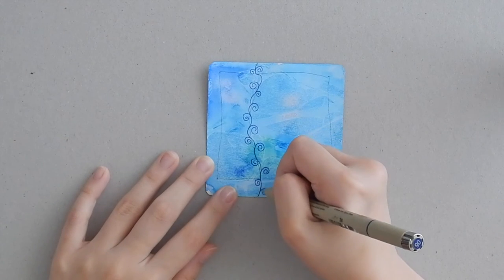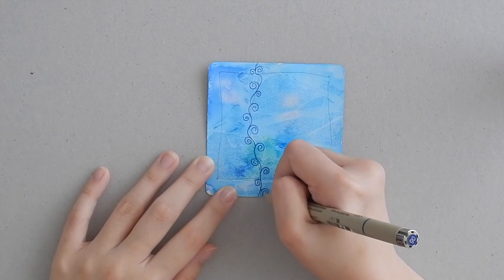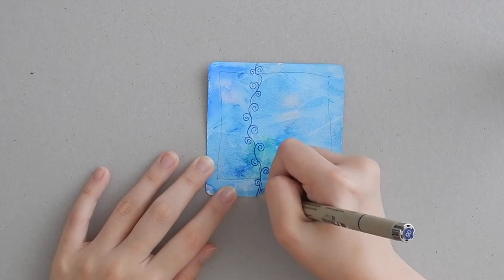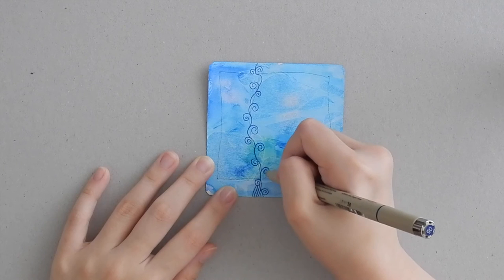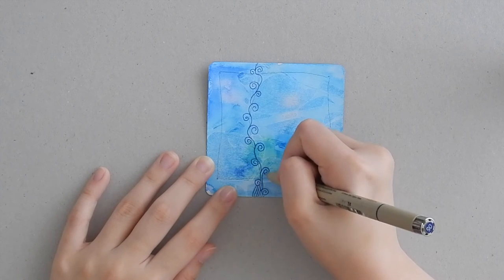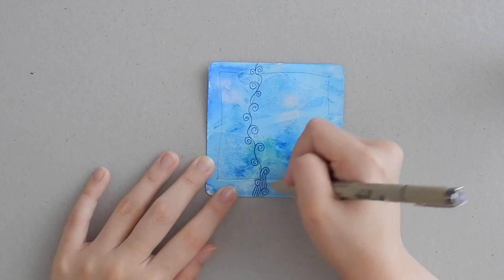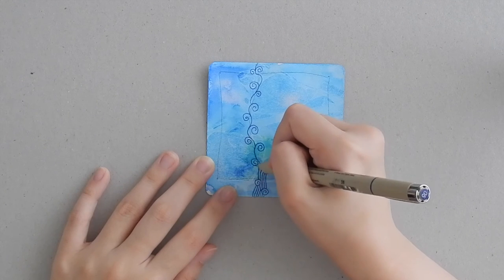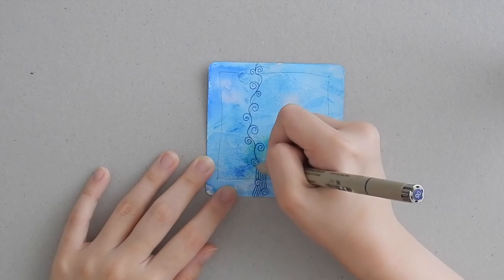And then going back to where we started, we are going to aura the lines that we have. You're going to keep light pressure on your pen and remember to breathe as you're drawing your lines. Two or three auras on each side usually works best.